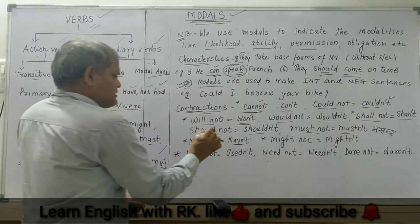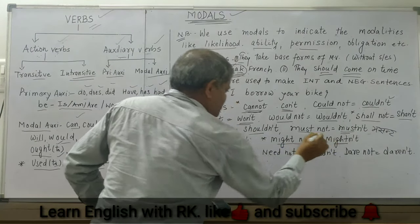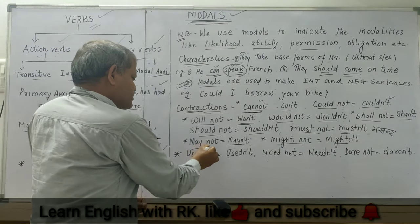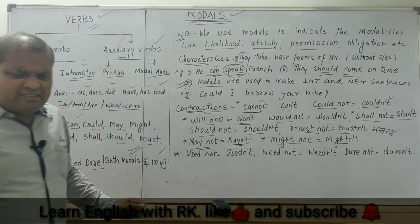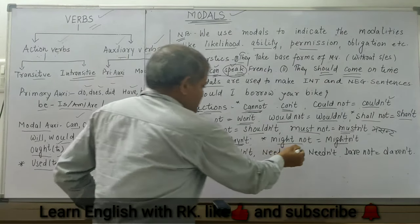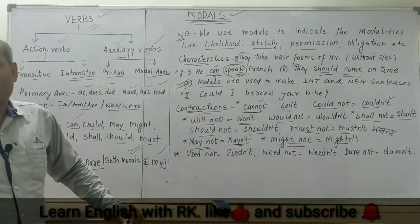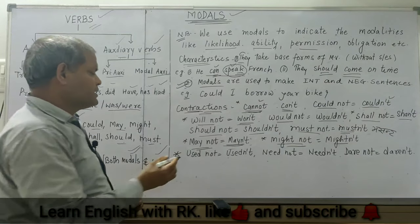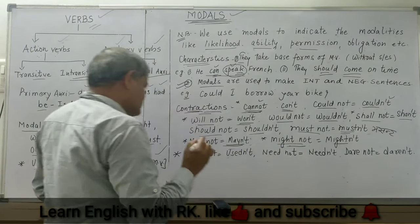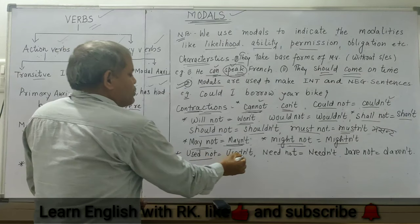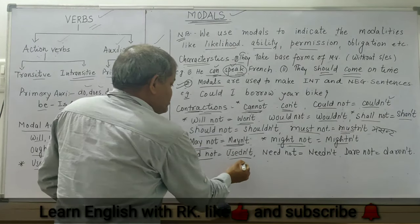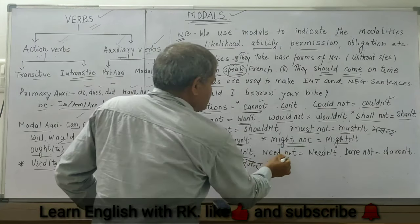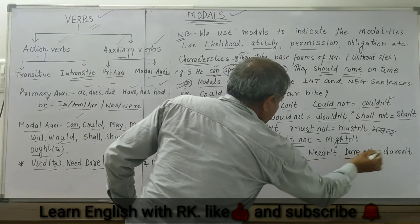Next: 'may not' — 'mayn't'. 'Might not' — 'mightn't'. But keep in mind, we may use these in written English, but in spoken English saying 'mayn't' or 'mightn't' sounds very awkward. You had better use 'may not' and 'might not'. 'Used to' — negative is 'usedn't' — don't say it incorrectly. 'Need not' — 'needn't'. 'Dare not' — 'daren't'.